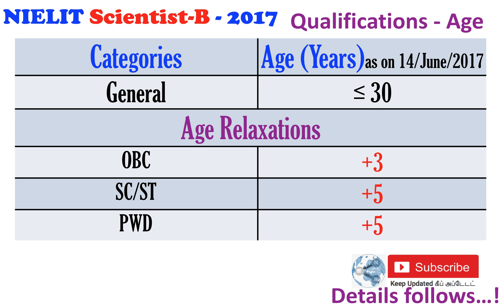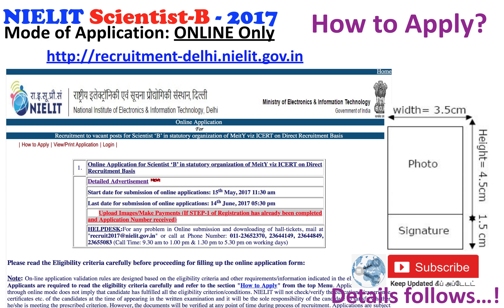For the general category, you need to be less than 30 years of age. For OBC, 3 years of relaxation is given from the upper age limit. For SC/ST, 5 years relaxation; for persons with disability, 5 years. The age should be as on 14th June 2017.